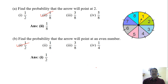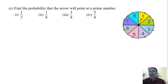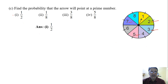Now we'll move towards the third question: find the probability that the arrow will point at a prime number. So how many prime numbers are here? 4 — that is 2, 3, 5, and 7. So what is the probability? We get 4 by 8, and that is 1 by 2. So the correct option is 1 by 2.